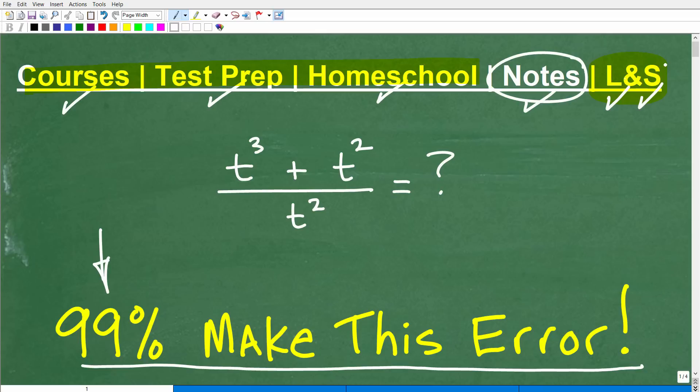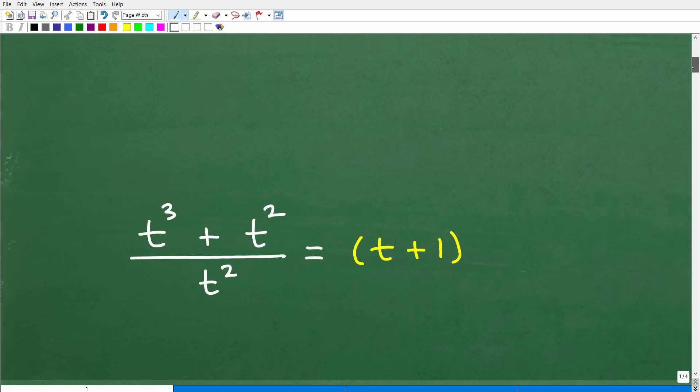Okay, so let's get into this and let's see if you are going to make this error. Okay, so remember, the question is, can this be simplified? And yes, it can. Here is the answer. Okay, we have t cubed plus t squared over t squared. The answer is t plus 1.